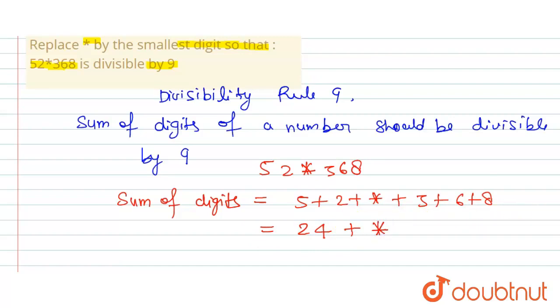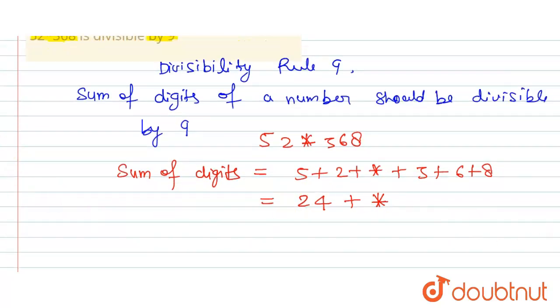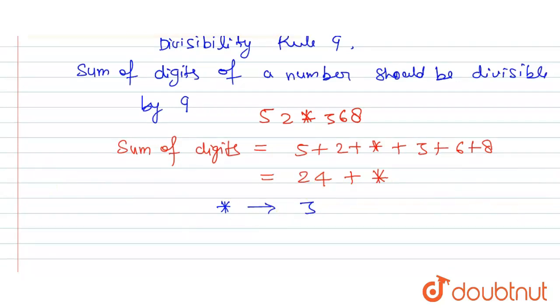My dear students, the condition is that the sum of digits should be divisible by 9. So this number is 24. Now, what is the smallest number to replace star? We will find what should be added to 24 so that it becomes a multiple of 9. The smallest number will be 3, so 24 + 3 equals 27. Star can be replaced by 3.